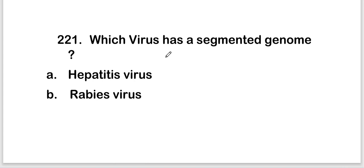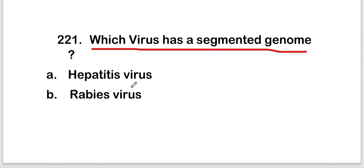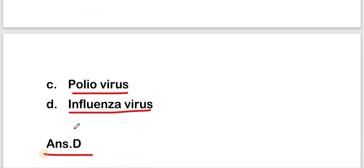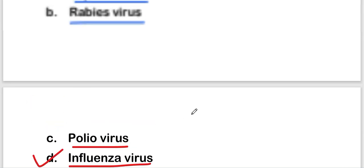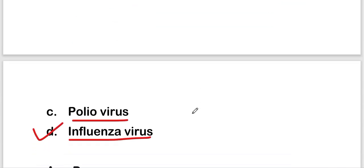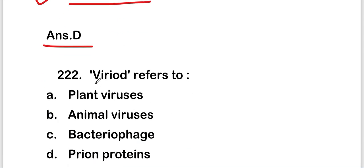Welcome to our new video on MCQs on virology or viruses. This is Part 12 of this series. The first question is: which virus has a segmented genome? Options are hepatitis virus, rabies virus, polio virus, or influenza virus. The right answer is option D — influenza virus. Influenza virus has a segmented genome.